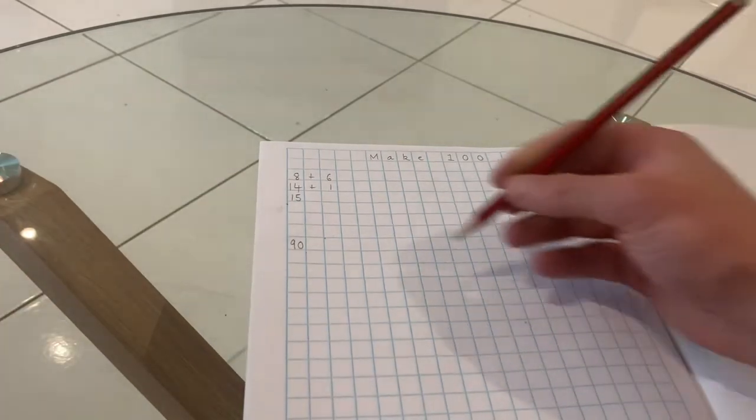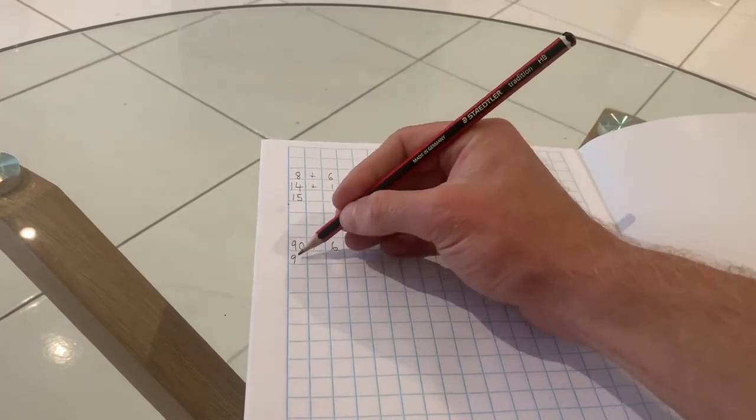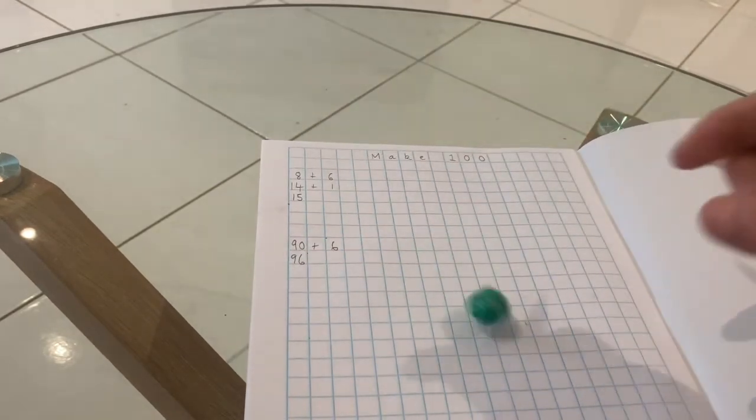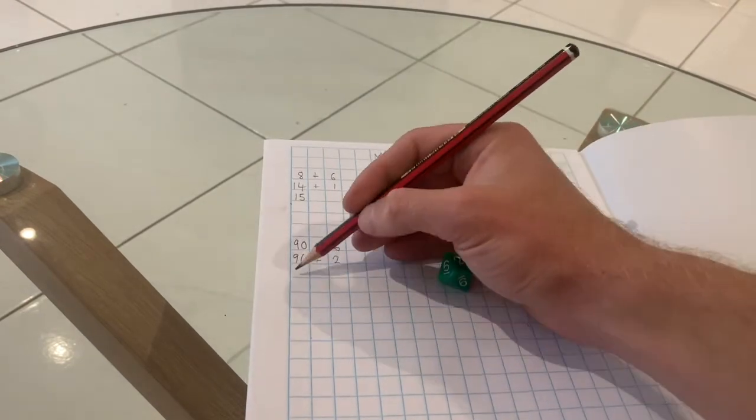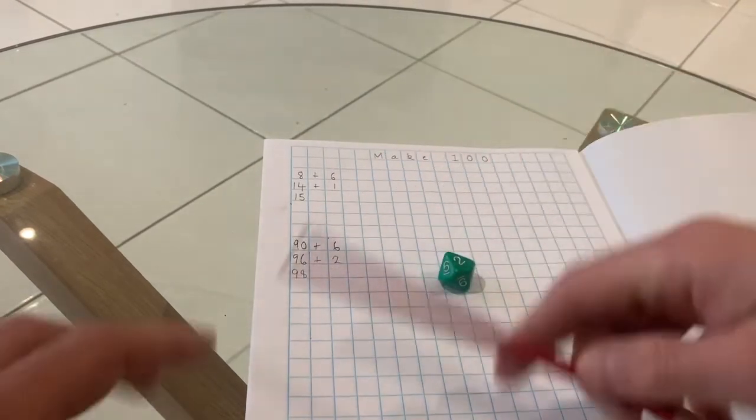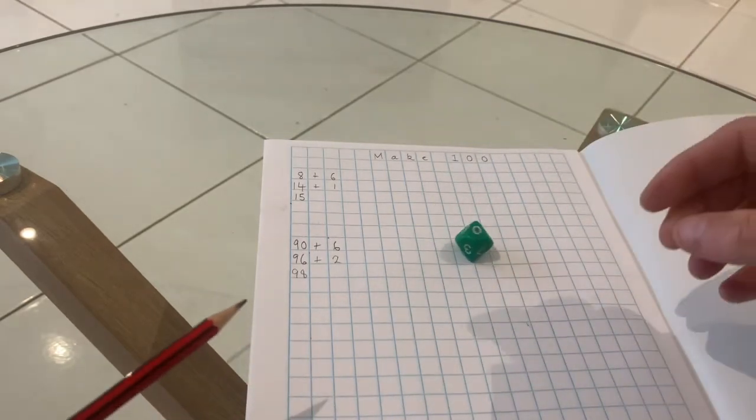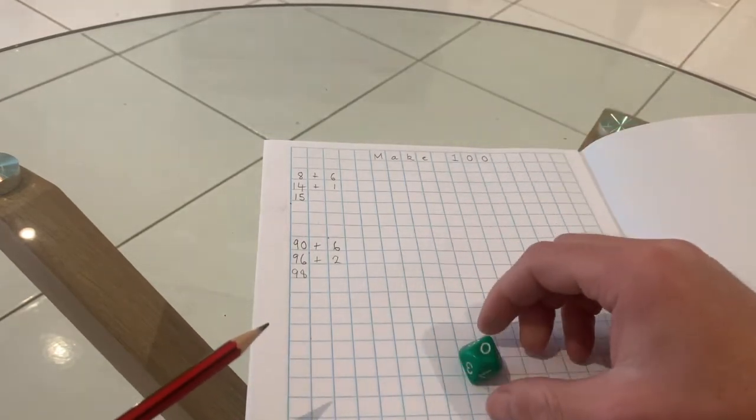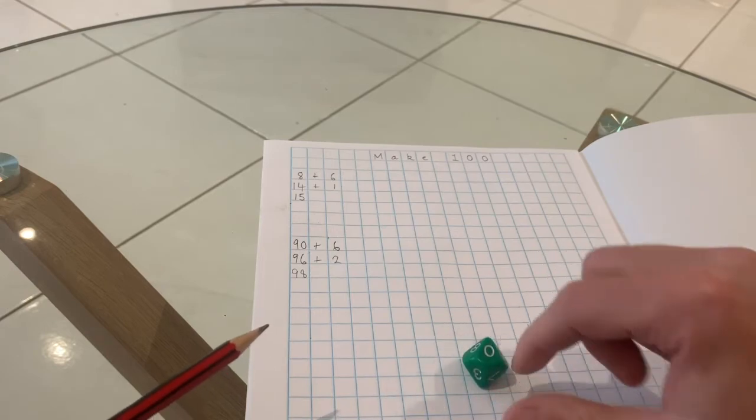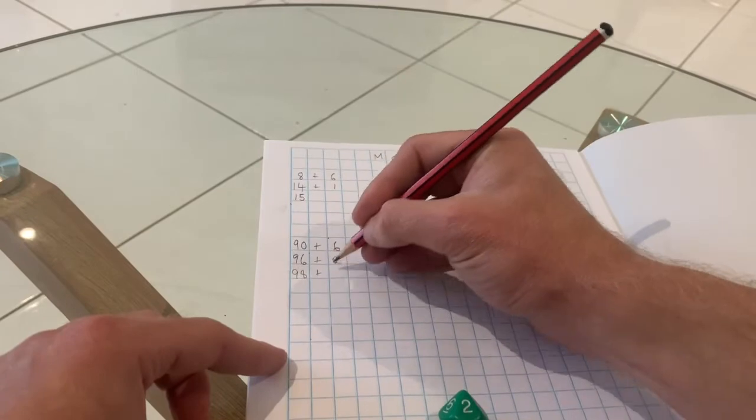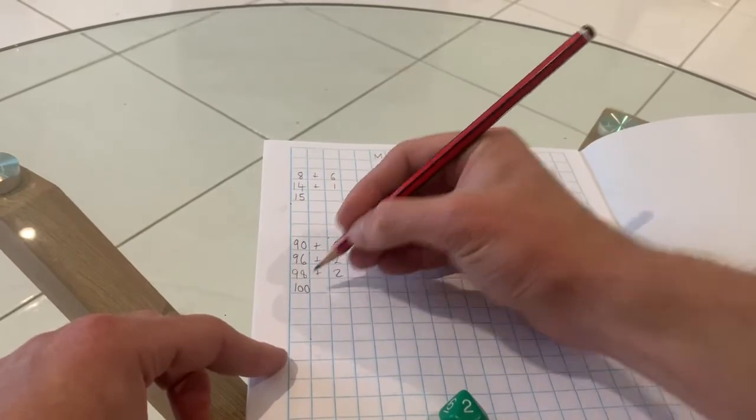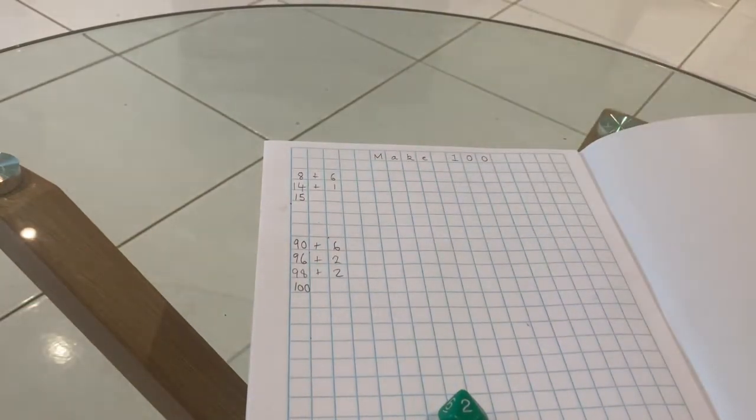This time I've got a 6, so that makes 96. I need 4 more. Well, I've got a 2 there which is less than 4 so I can still go. So now I'm on 98. Now I need that 2 again. Oh, 0 is worth 10 in this game. I did forget to explain that before. A 0 is worth 10. And there's the 2 I need to make exactly 100. So I would yell stop at that point or I would stop my time if I was playing.